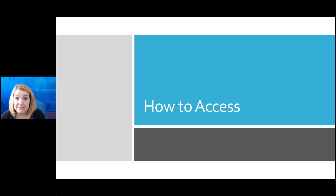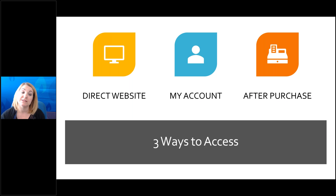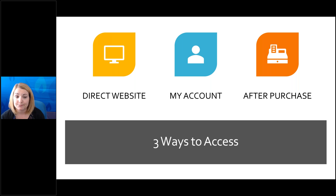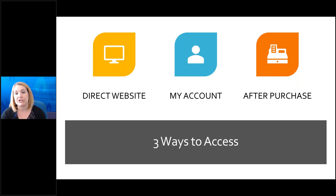So how do you access this material? We've had a lot of people asking us about that, which is part of the reason we wanted to do this webinar today. There are actually three ways to access the digital content. The first way is going to be directly through the direct website — the easiest and most straightforward way. You can also get to it through My Account on cph.org, and then right after you purchase on your thank-you page there is a link as well.